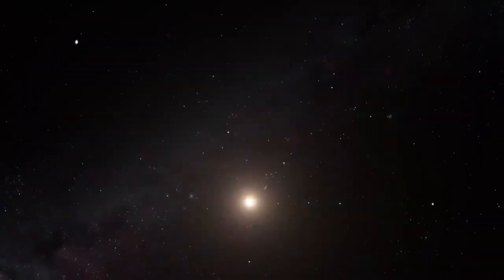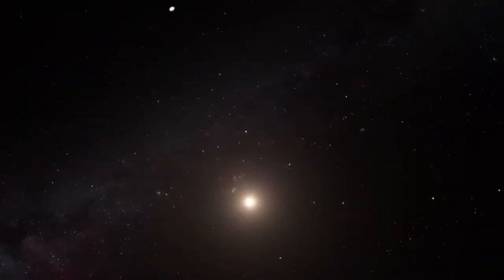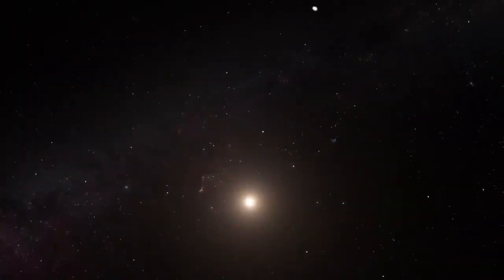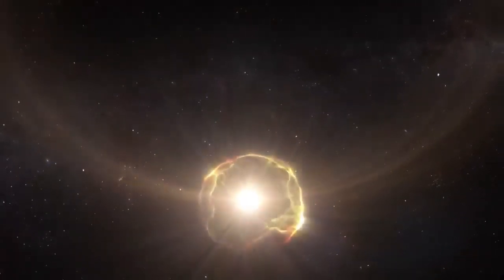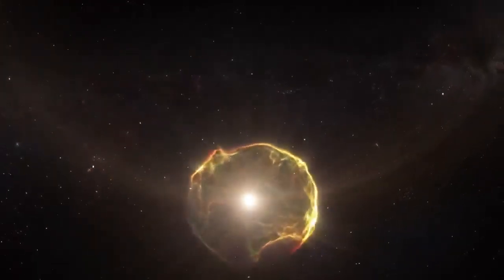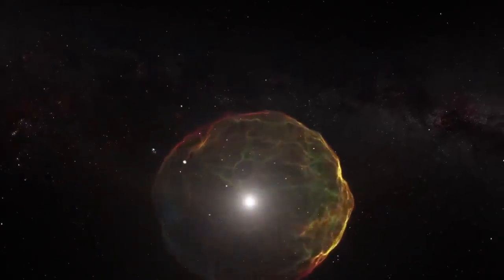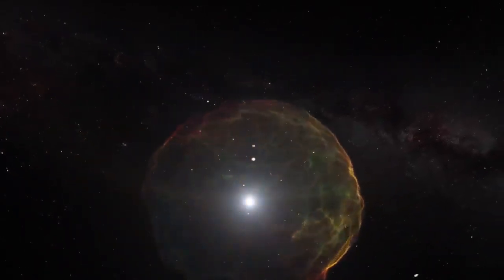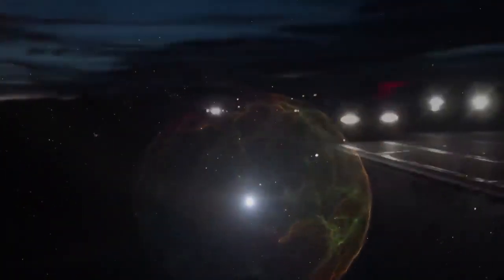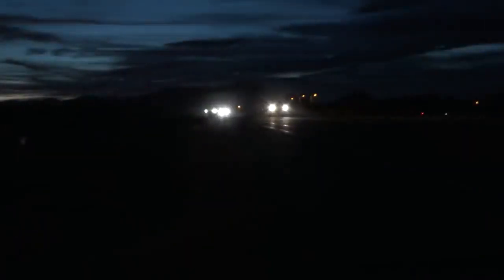A Type Ia supernova often begins with two stars in a close orbit, one of which draws gas from its companion. When it gains enough mass, it undergoes a runaway nuclear reaction and explodes. Because Type Ia supernovae are all thought to blow up in the same way, they have the same intrinsic brightness. That makes them ideal for measuring cosmic distances. It's like looking at car headlights approaching on a highway. The dimmer they appear, the farther away they are.